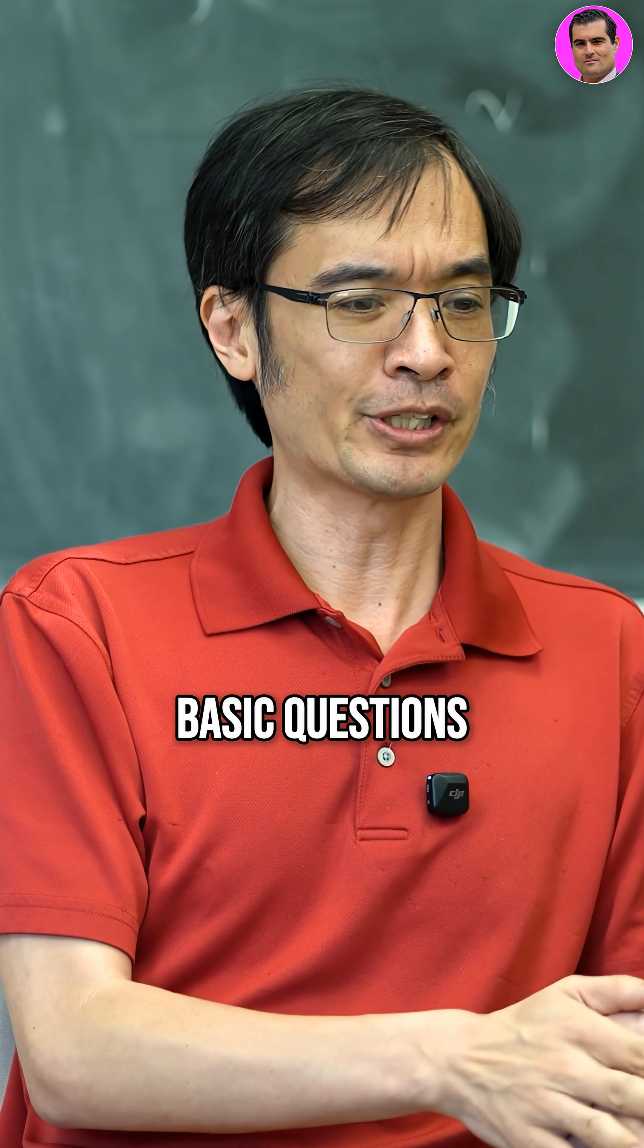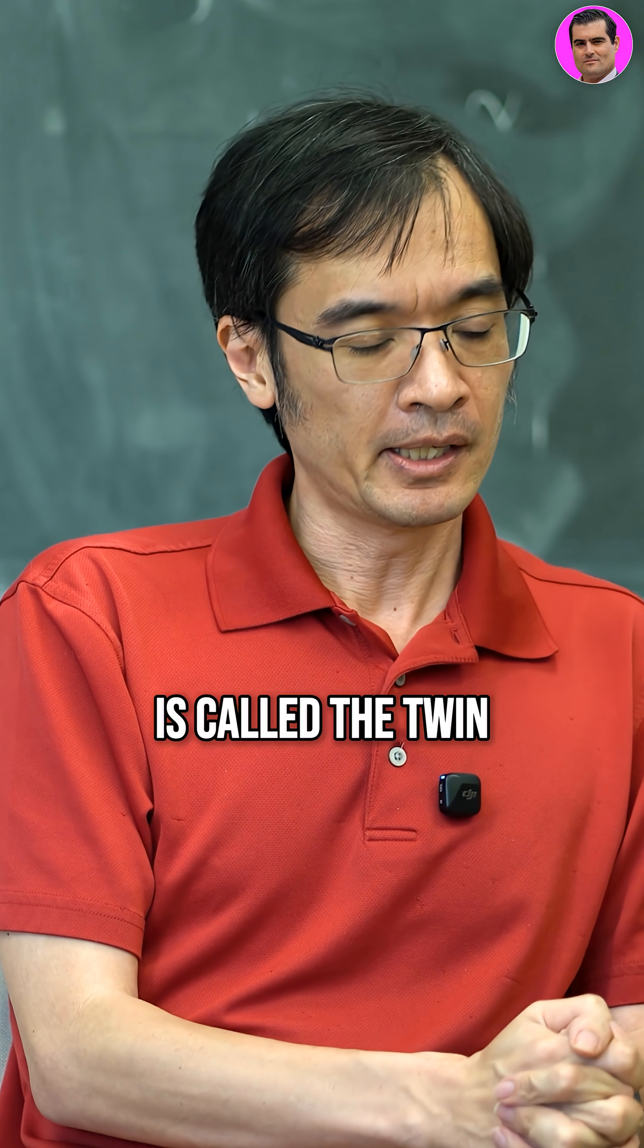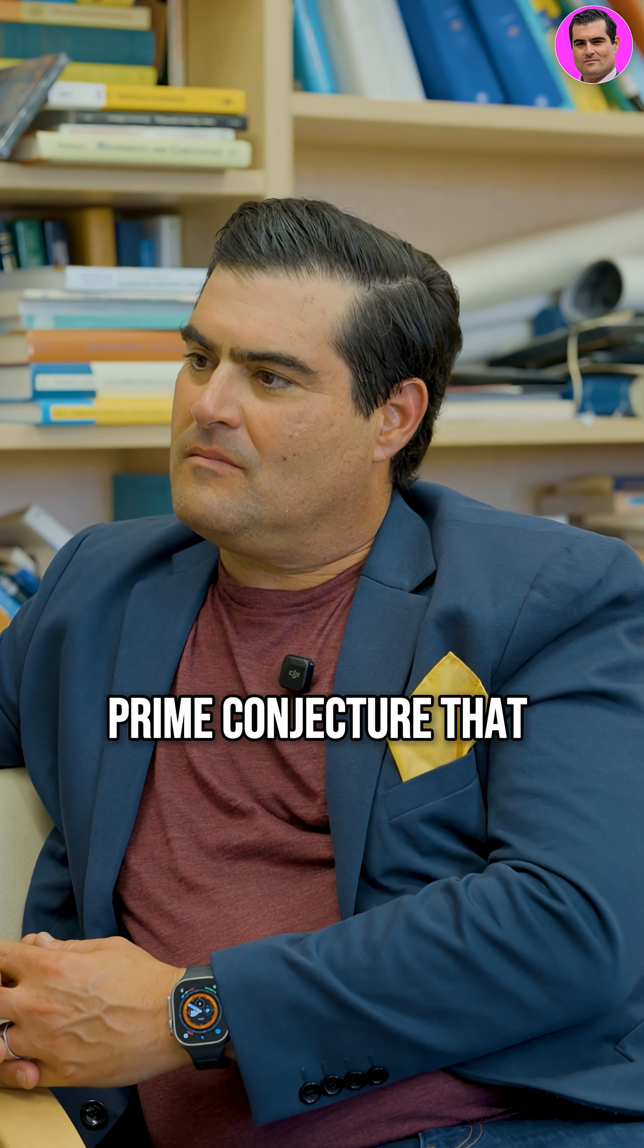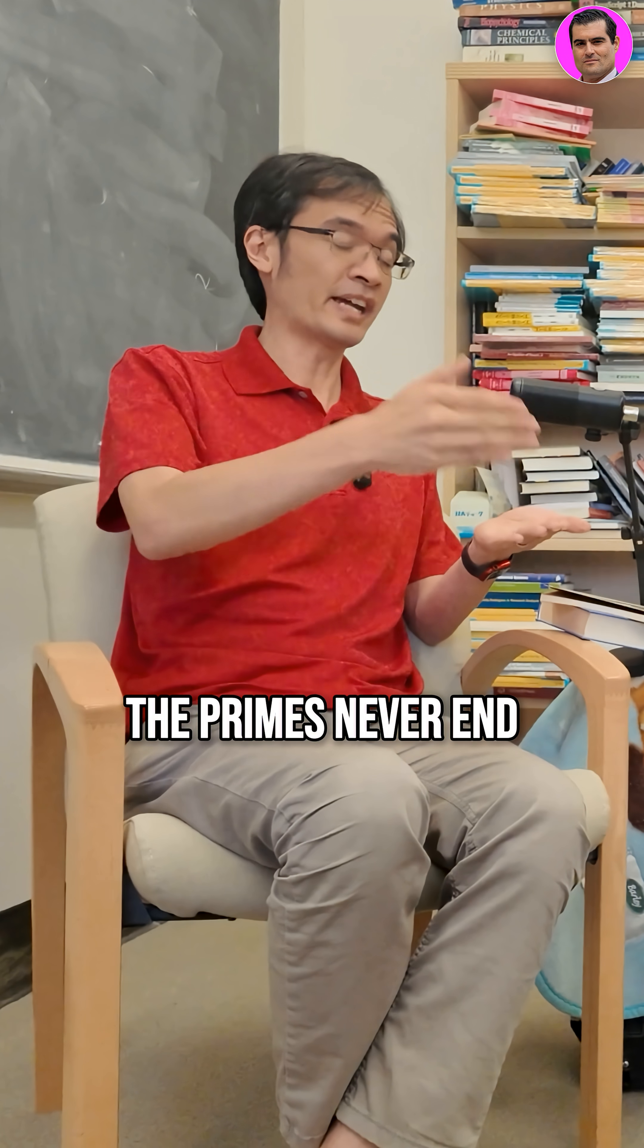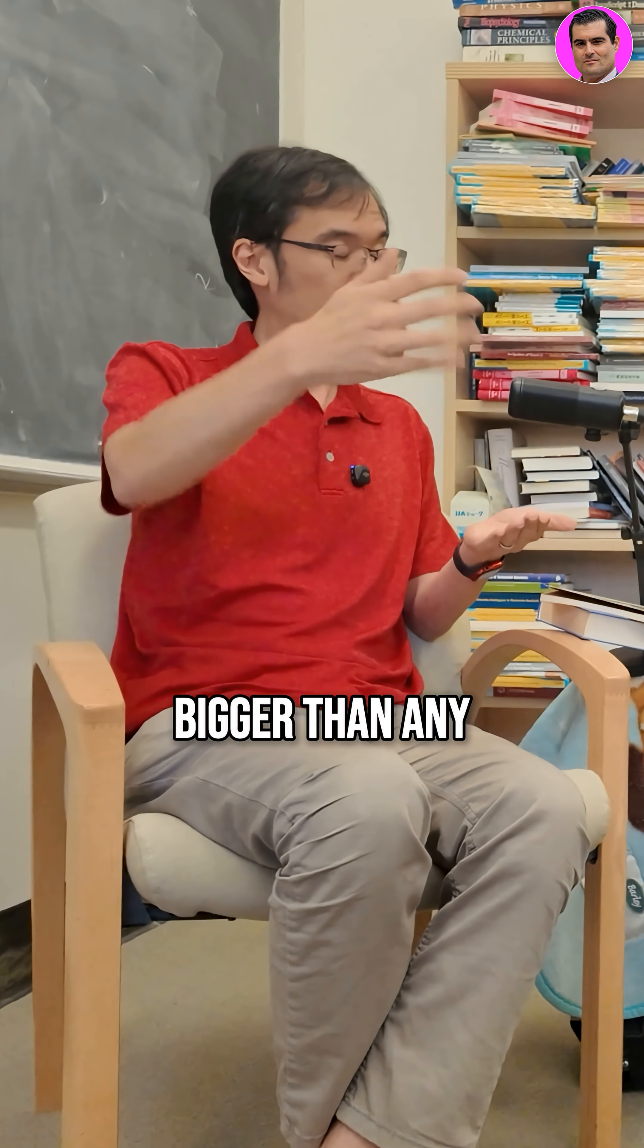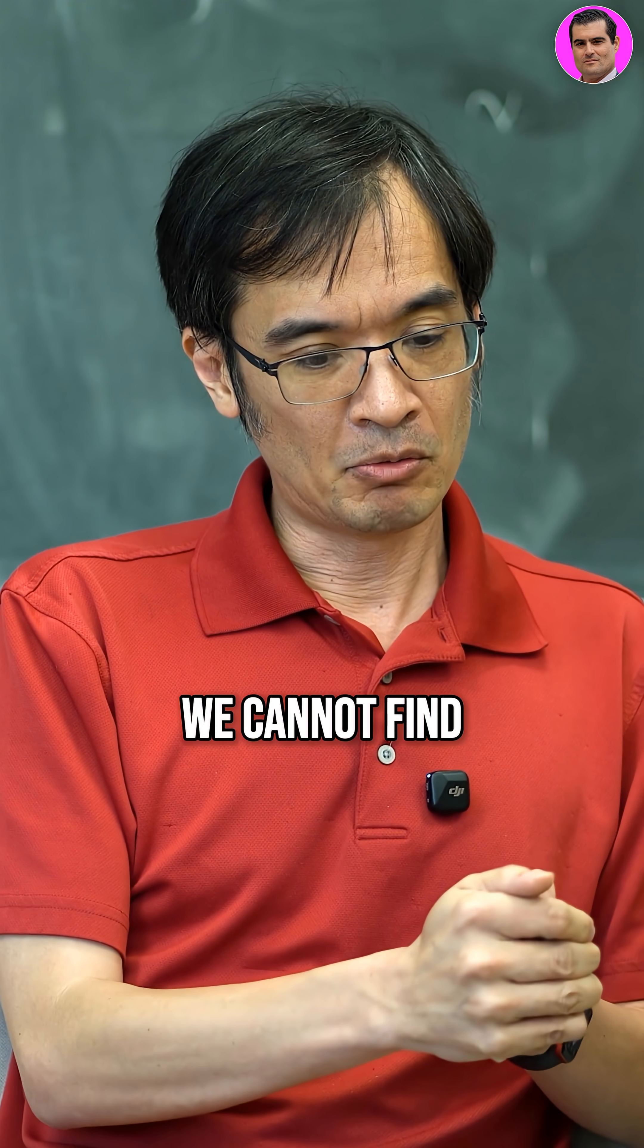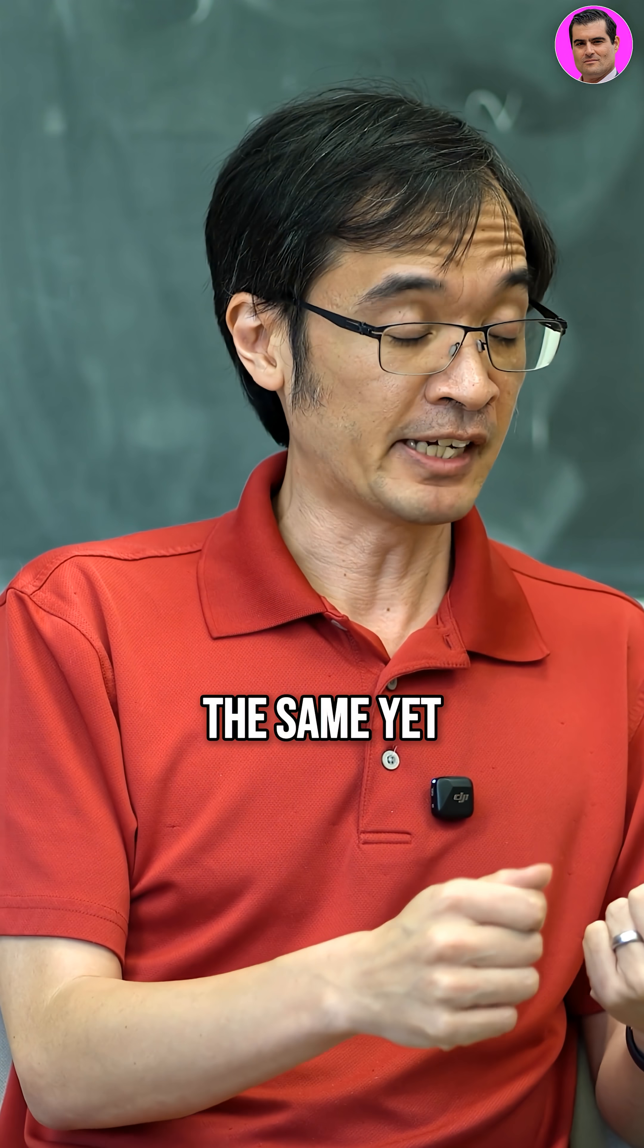And one of the most basic questions, which is at least 300 years old, is called the Twin Prime conjecture. You could show there's infinitely many primes. The primes never end. You can always find primes bigger than any number you wish. But we cannot say the same yet for prime twins.